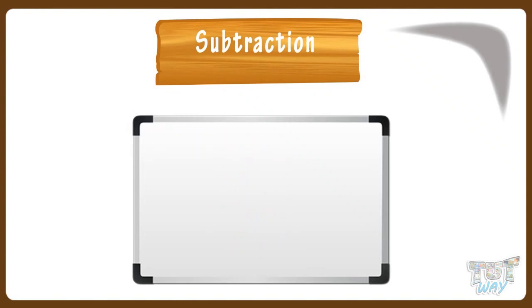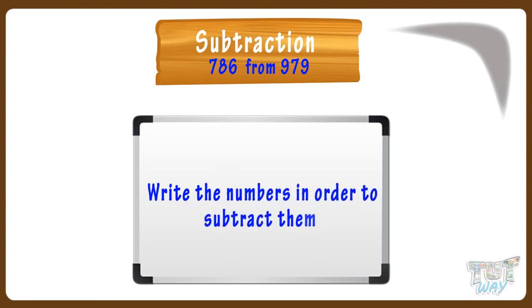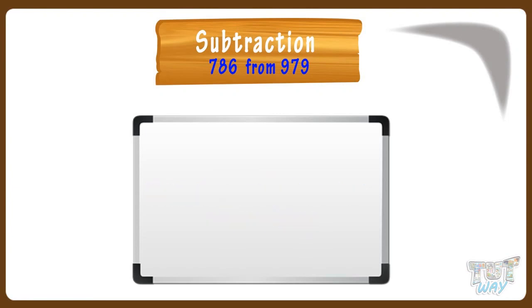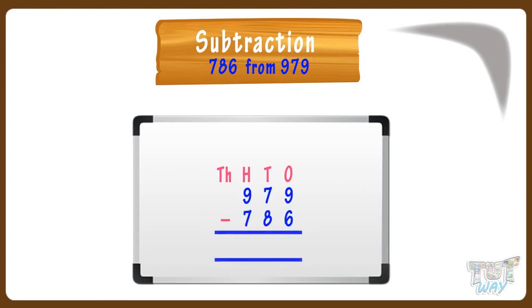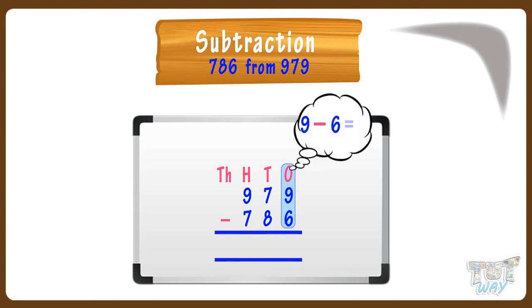We have to subtract 786 from 979. Let's do it. First of all, we will write the numbers in order to subtract them — write each numeral below its place value. Remember to start from ones place whether it's addition or a subtraction problem. 9 minus 6 equals 3, so write 3 in the answer at ones place.